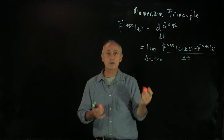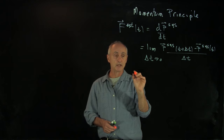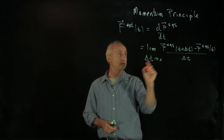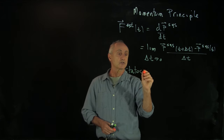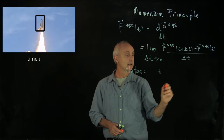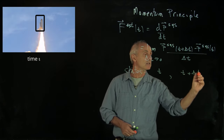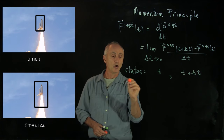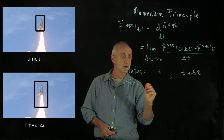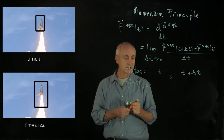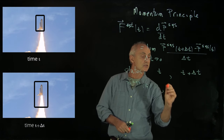In order to analyze the rocket, what we need to do is separately analyze the momentum at our two states. We have a state at time t, and a state at time t plus delta t. Our goal will be to analyze the system momentum at time t plus delta t and separately the system momentum at time t, and then apply the momentum principle.